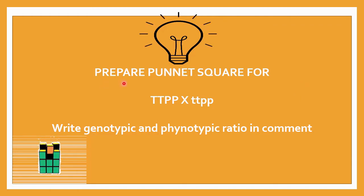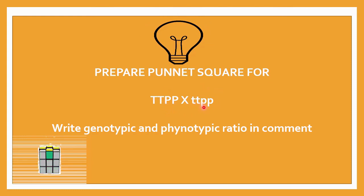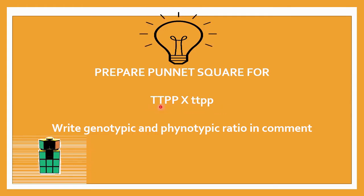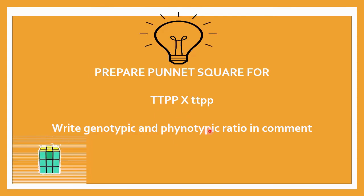Now I am giving you one activity: prepare a Punnett square for this dihybrid cross combination. Two alternative alleles are given, so you have to do the Punnett square analysis and identify the genotypic and phenotypic ratio. Write down the genotypic and phenotypic ratio in the comment. You have three minutes for this activity — you can start now.